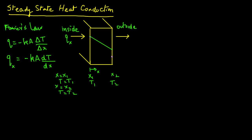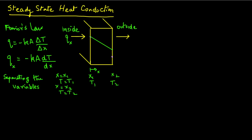Now we look at our differential equation. From calculus, a very common procedure to solve these types of equations is by separating the variables. In our case, there are two variables: temperature and location X. The thermal conductivity K is constant, area is constant, and the rate of heat transfer under steady-state conditions is constant. So we move DX to the left-hand side, placing X on one side and temperature on the other: QX DX equals minus KA DT.